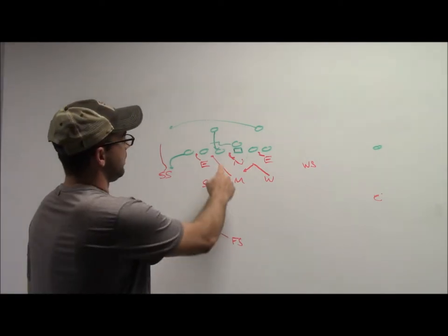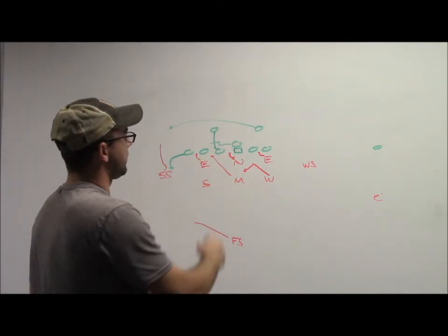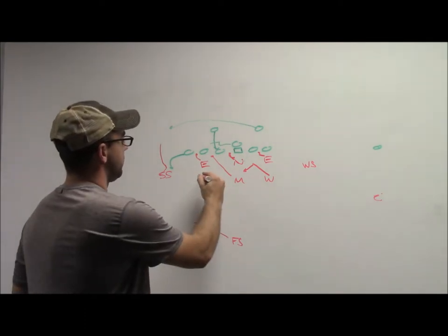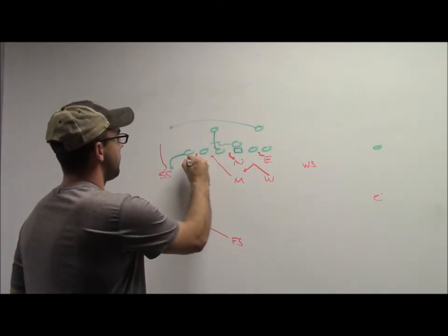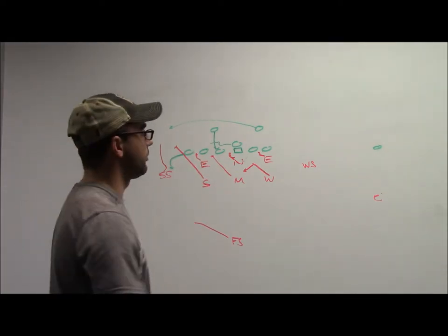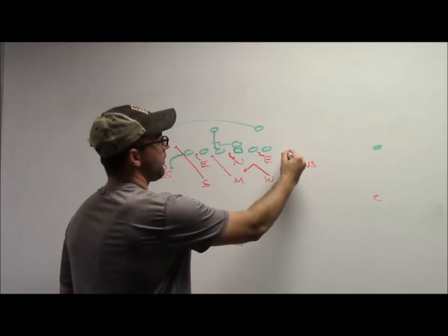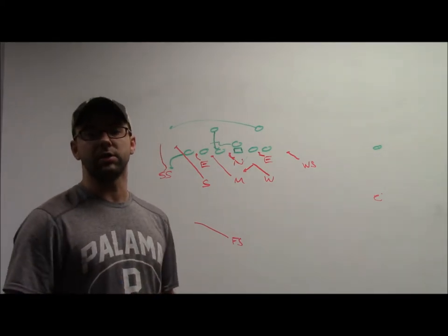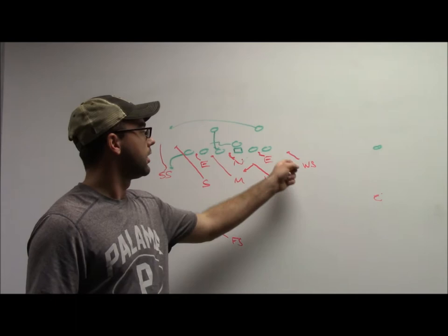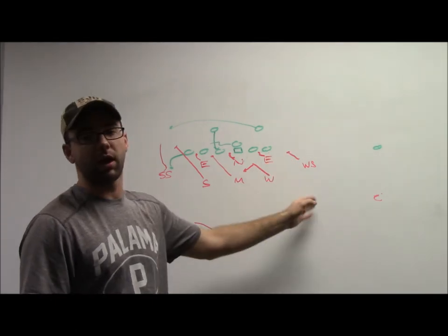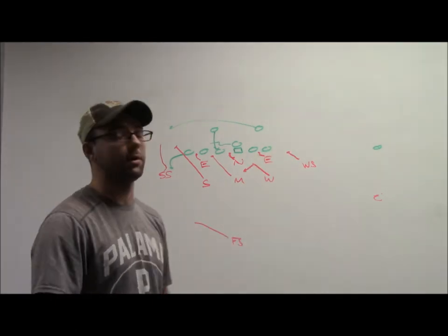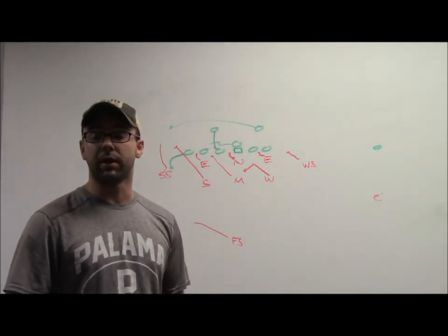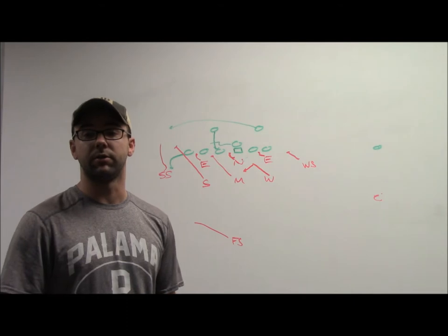So these guys are on the dive, he's on the quarterback, and the Sam is free to run the alley and pursue inside out quarterback to pitch. So we've got that play pretty well defended. We don't need to have another lineman on the backside, and this is one of the biggest things I like about the 3-3 stack, is you can slant to the strength and leave. He can secure this gap. Hurt you a little bit perhaps in a pass rush, but when we're playing against a triple option team, we're not really concerned about the pass.